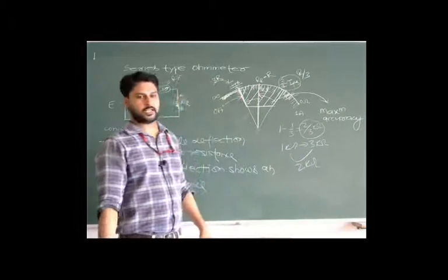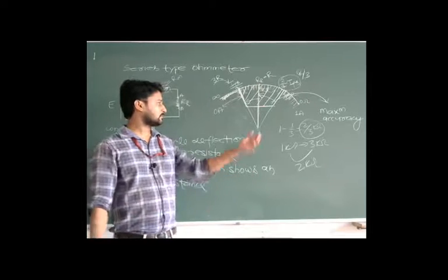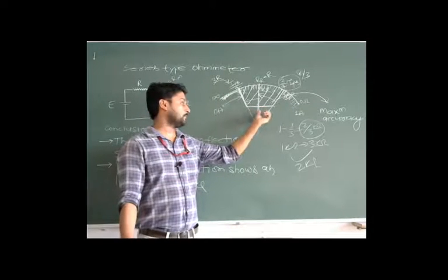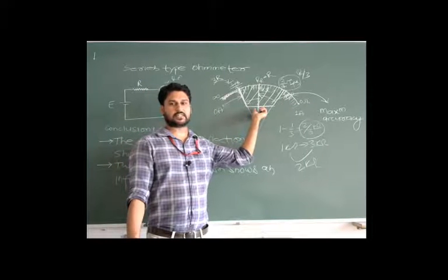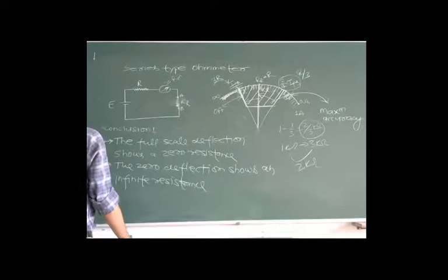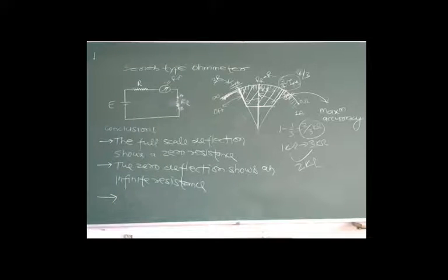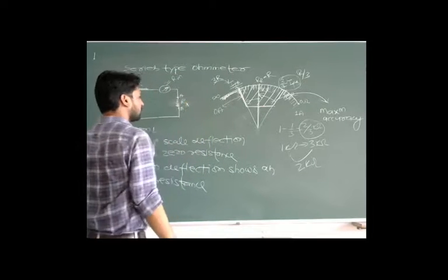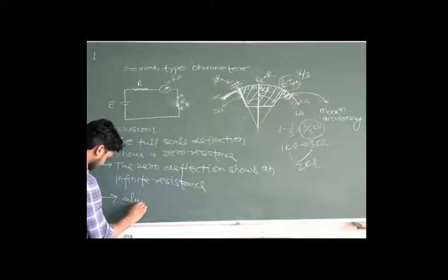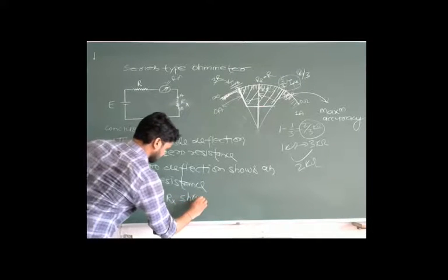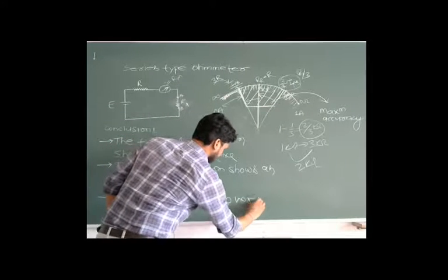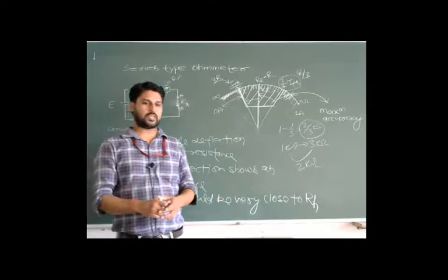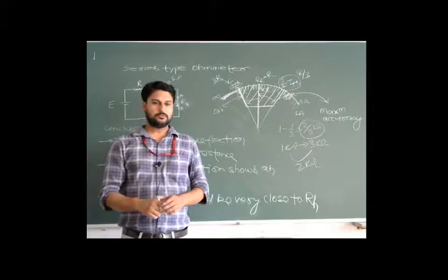To measure a quantity accurately, we have to take the measurement around the half-scale value. For the highest accuracy we should take the measurement around half-scale deflection of the scale. To achieve this, it is always desirable that the value of unknown resistance Rx should be very close to R — the total internal resistance of the circuit.